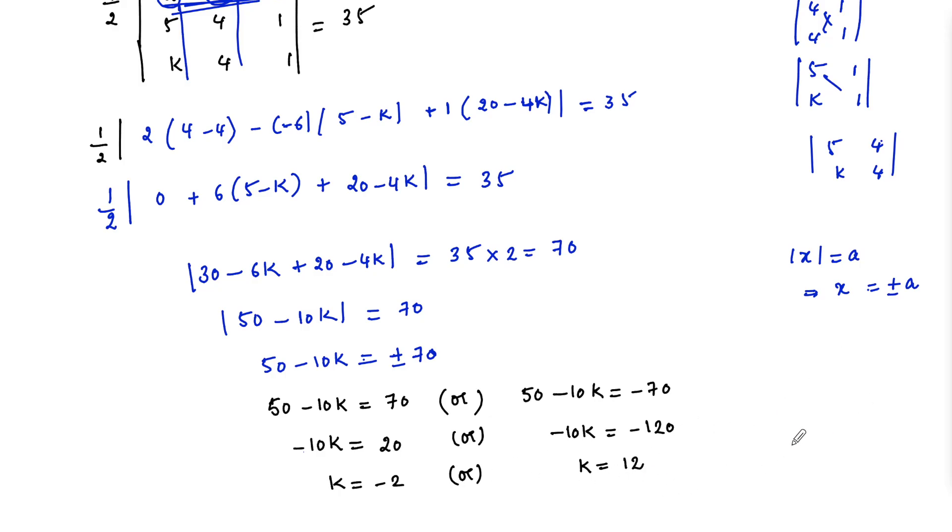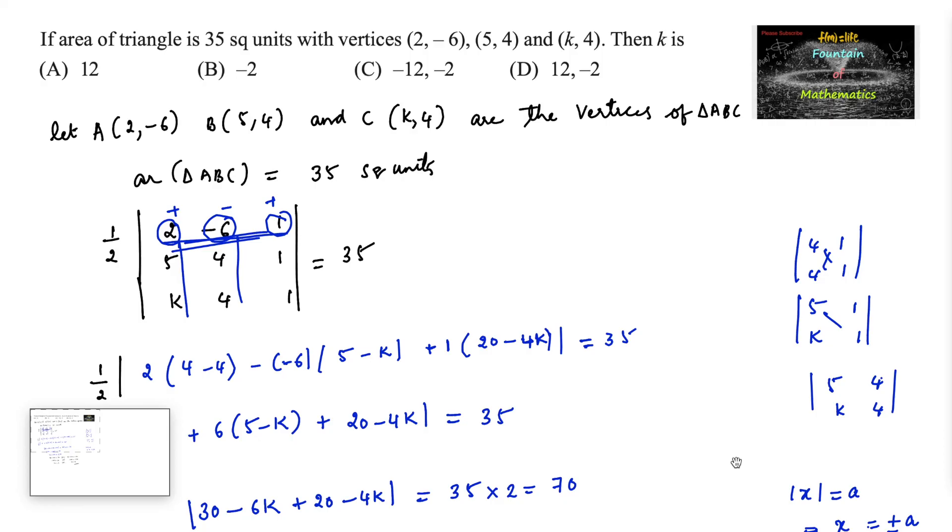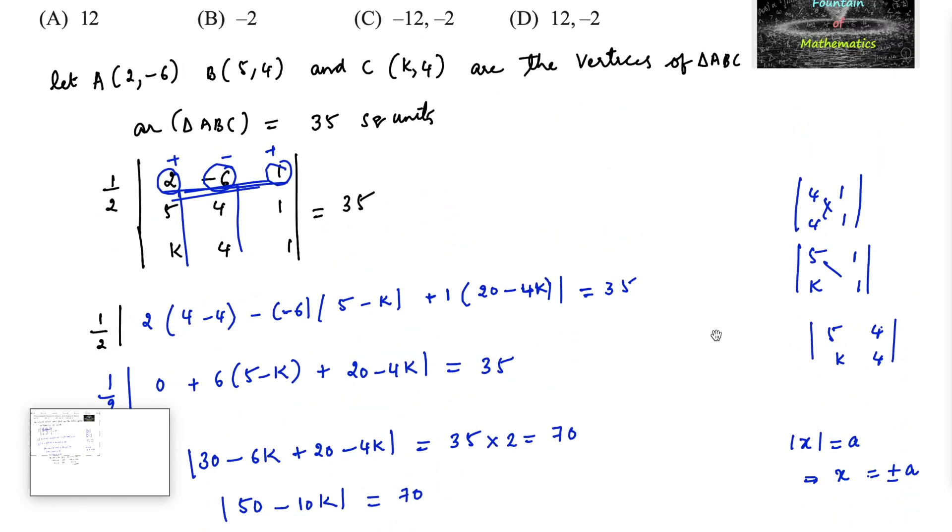So the value of k can be minus 2 or 12. So we can go with option minus 2 or 12, which is option D.